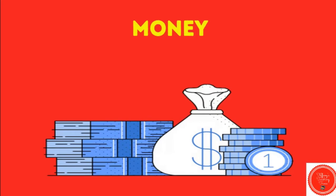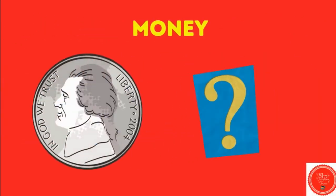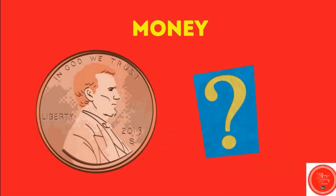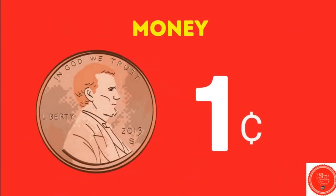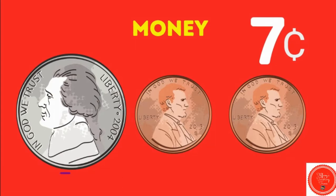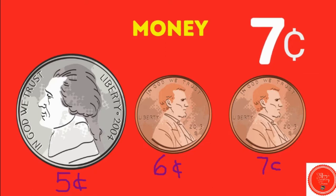Let's talk about money. Here's a nickel. Do you remember how much a nickel is worth? A nickel is worth five cents. How about this coin? Do you know what it's called? A penny. How much is a penny worth? A penny is worth one cent. So when we want to make seven cents, we can start with a nickel — here's five cents — and then we're going to count on: six cents and seven cents. So to make seven cents, we need a nickel and two pennies.